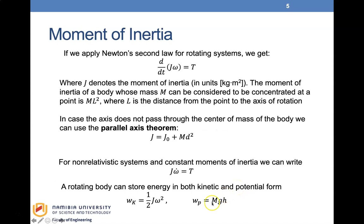We look at the various elements in the rotational system, just as we had elements in translational systems. Applying Newton's second law for a rotating system gives torque equals d/dt of J·omega, where J denotes the moment of inertia with units of kilogram-meter squared. In translational systems we had mass, but in rotational systems we use moment of inertia.